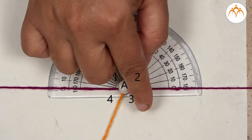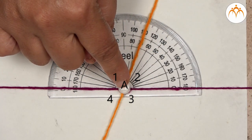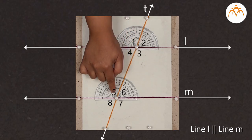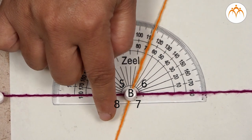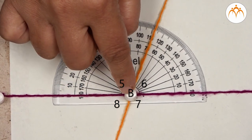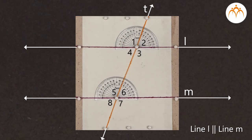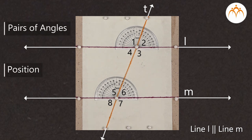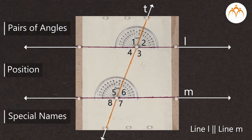Four angles are at intersection point A and four at intersection point B. Some of these eight angles can be paired together according to the positions they occupy, and these pairs of angles are known by some special names. Let us study the pairs of corresponding angles.